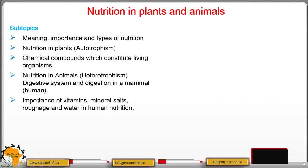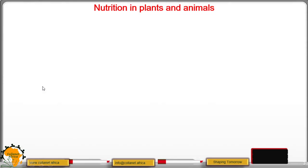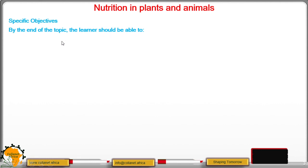Under heterotrophism we have the digestive system and digestion in a mammal, with the example being a human being. We shall also look at the importance of vitamins, mineral sources, roughage, and water in human nutrition, and finally discuss the factors determining energy requirements in humans. By the end of the topic, you the learner should be able to first define nutrition and state its importance in living organisms.